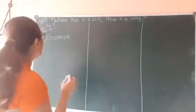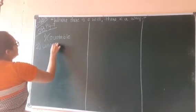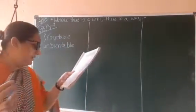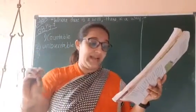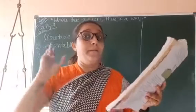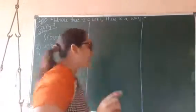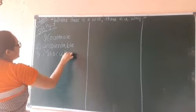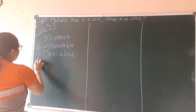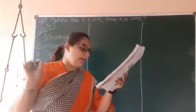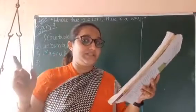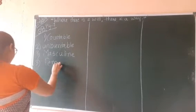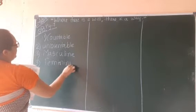Things that you cannot count will be uncountable. Third one: nouns that denote a male are of masculine gender — M for masculine, masculine for male. Then nouns that denote a female are of feminine gender — feminine.